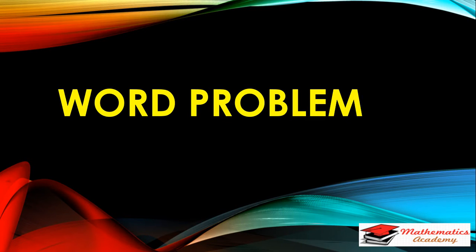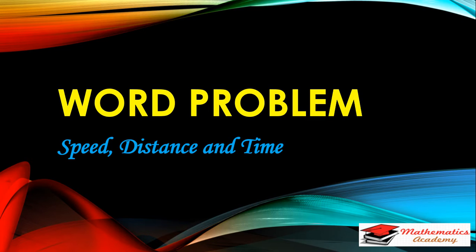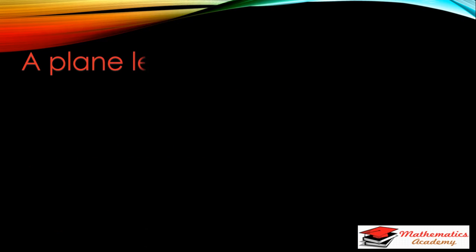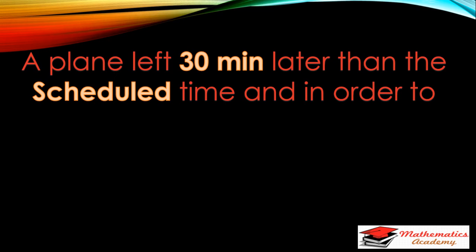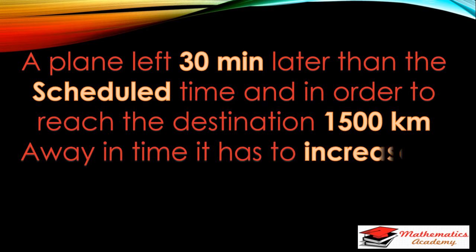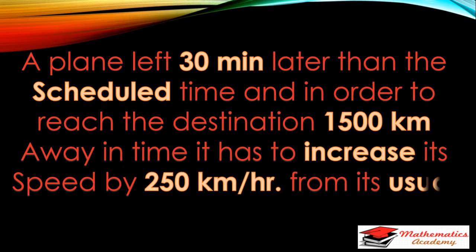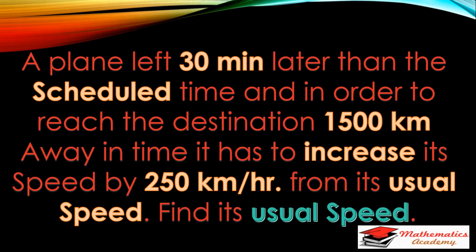Hello, this is Prashant Jain from the channel Mathematics Academy. I am here with a word problem on the topic of speed, distance, and time. The problem is: a plane left 30 minutes later than the scheduled time, and in order to reach the destination 1500 km away in time, it had to increase its speed by 250 km per hour from its usual speed. Find its usual speed.